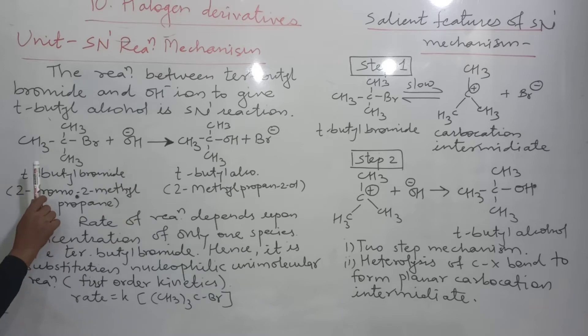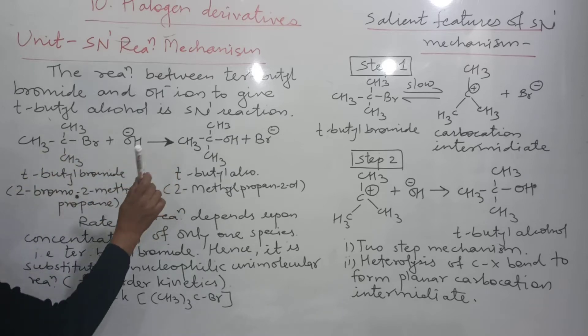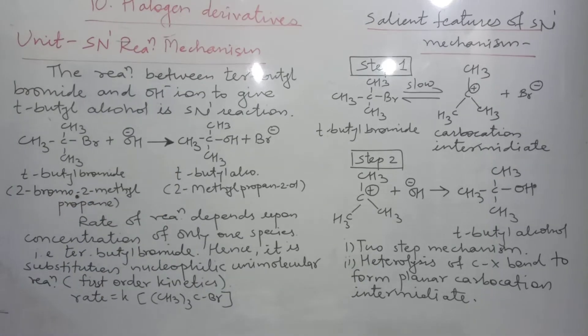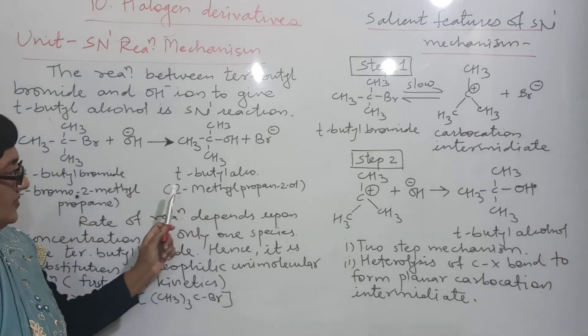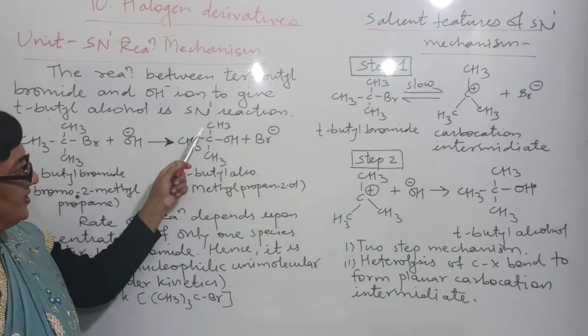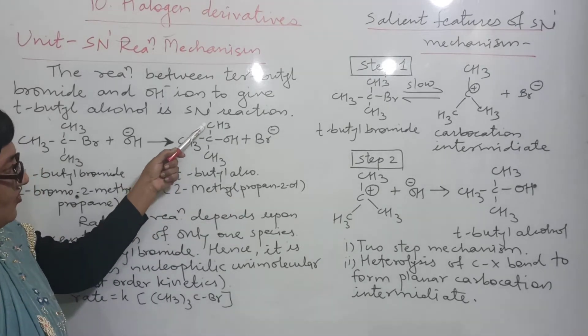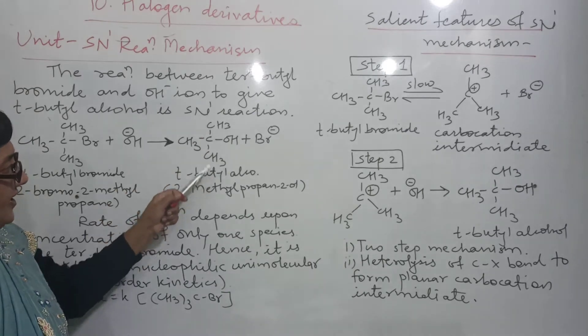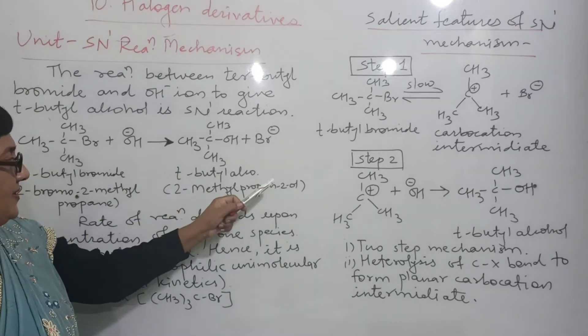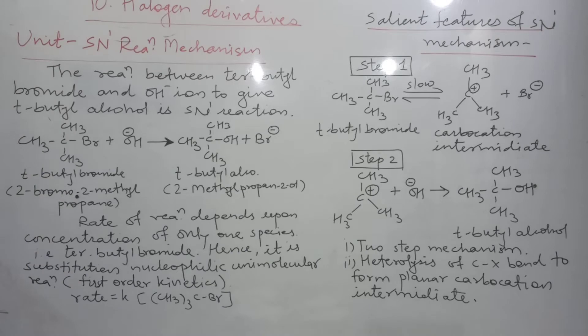You should know all the names of these reactants and products because in examination, the question can be asked with a linear. So, tertiary butyl bromide means 2-bromo, 2-methyl propane. And tertiary butyl alcohol means 2-methyl propane-2-ol. Here if we add, what is the name of the methyl? 1, 2, 3. 2-methyl. And this is propane 2-ol.